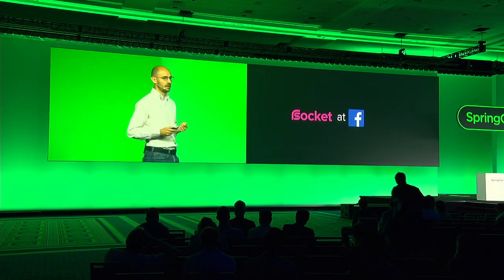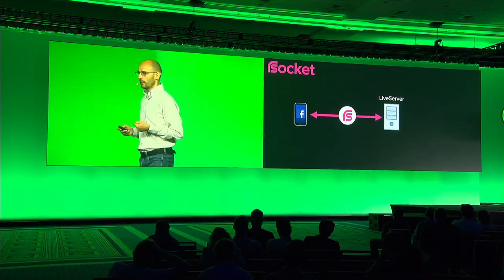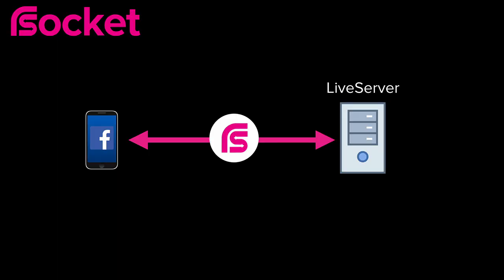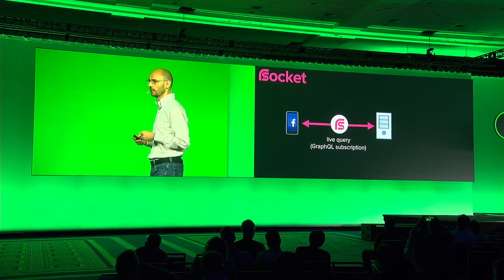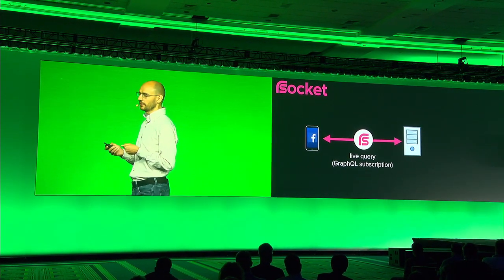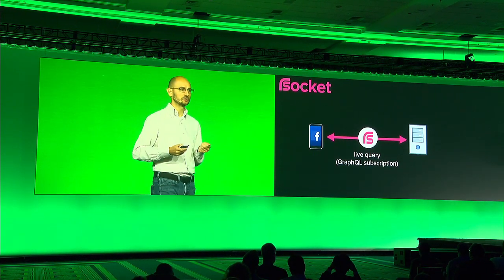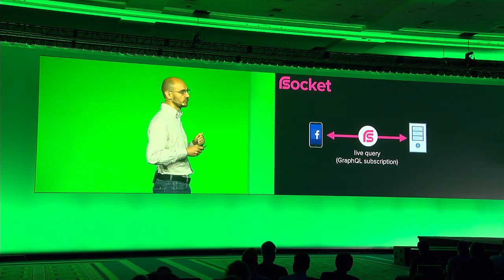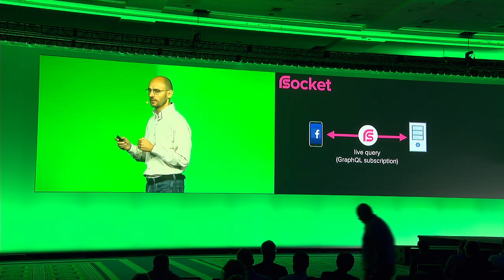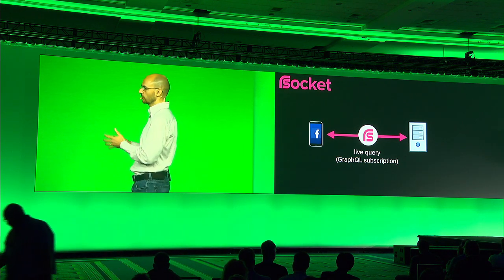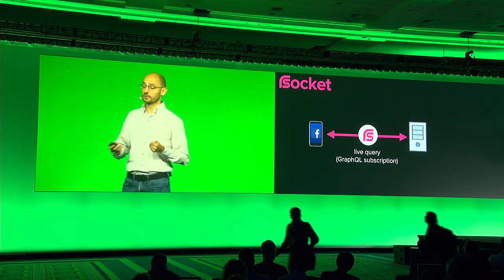Here's an example of how we use RSocket at Facebook. The service is called Live Server, which is responsible for responding to Live Queries. A Live Query can be seen as a GraphQL subscription — GraphQL being a very efficient and powerful way of requesting data. A Live Query is basically a query where the server replies with the data but also a stream of future updates. The server watches all the data sources needed to compute the response, and every time one of those sources changes, it recomputes and sends the update to the client.